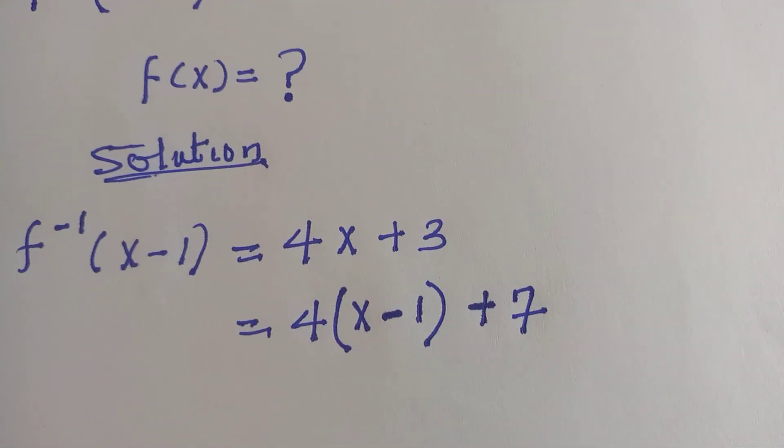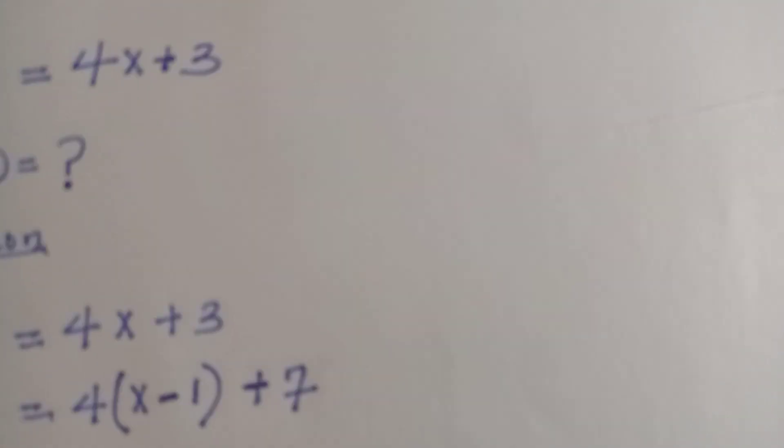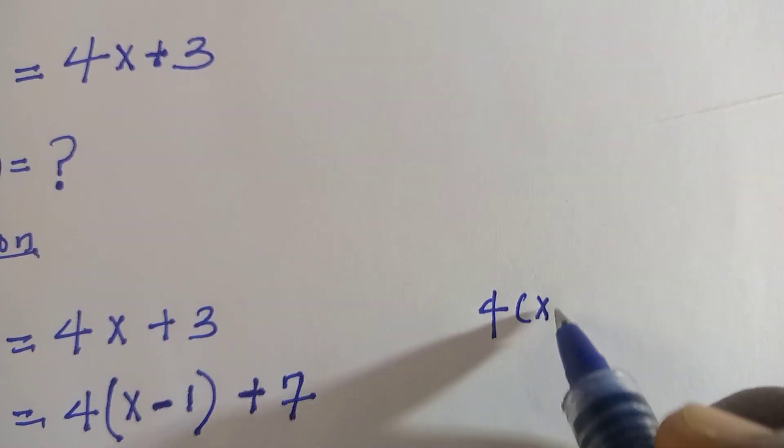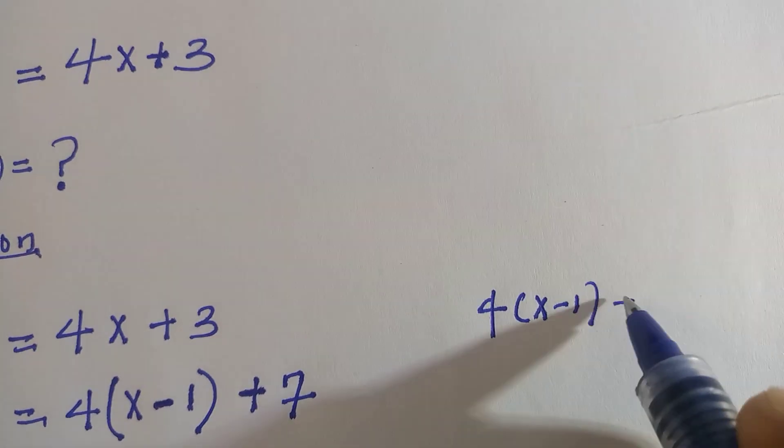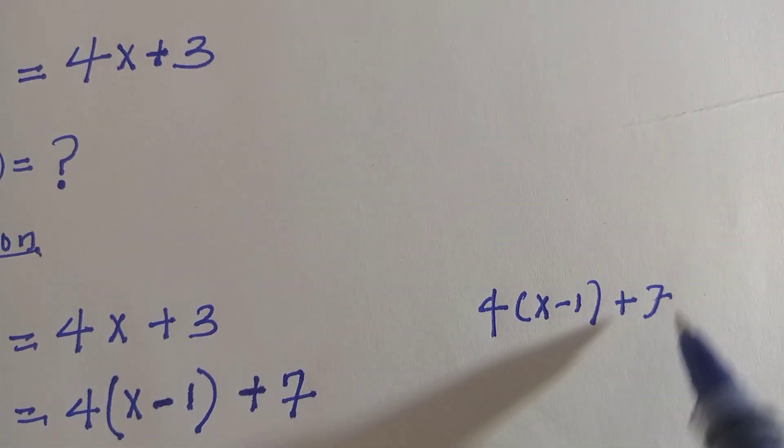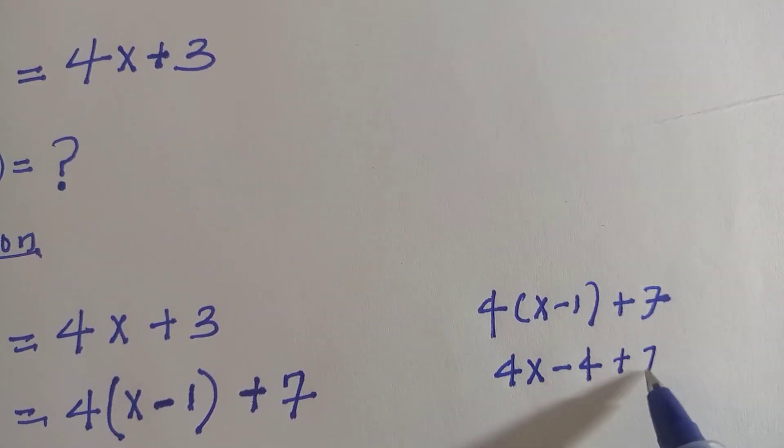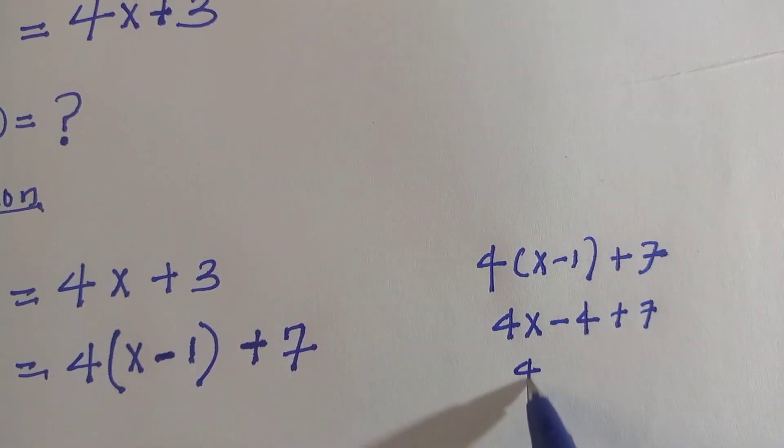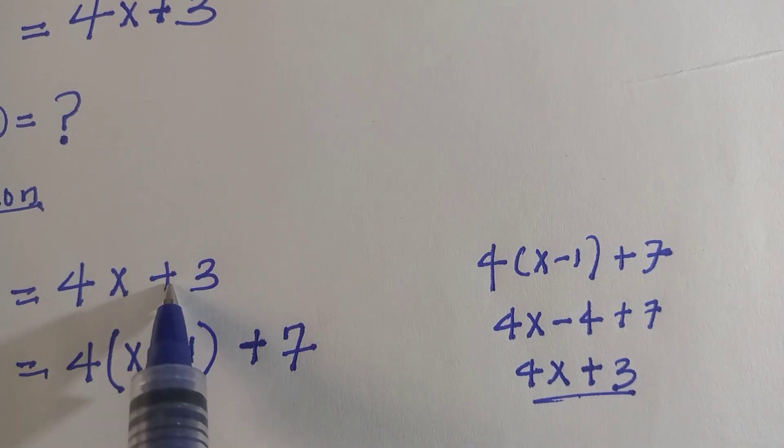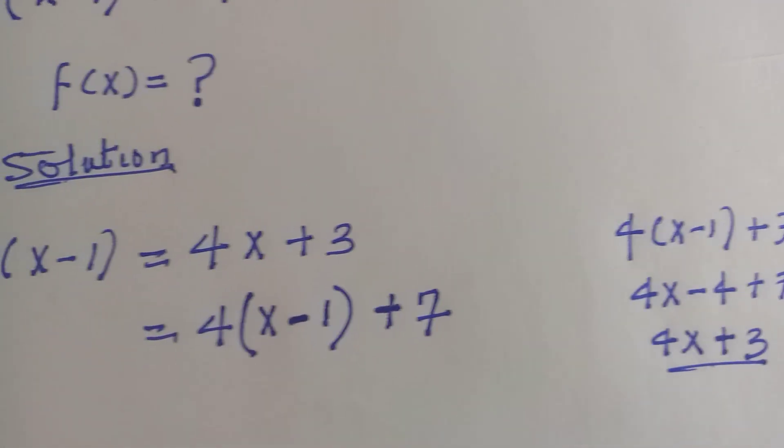And to verify that, let's see if they are equal or not. If you have 4 bracket x minus 1 plus 7, by opening the bracket, 4x minus 4 plus 7, and this equals to 4x plus 3. This manipulation is absolutely correct.